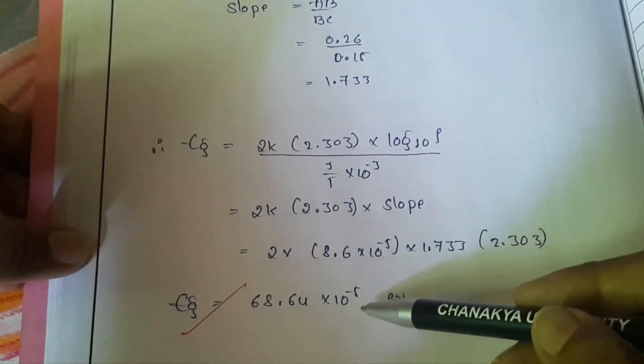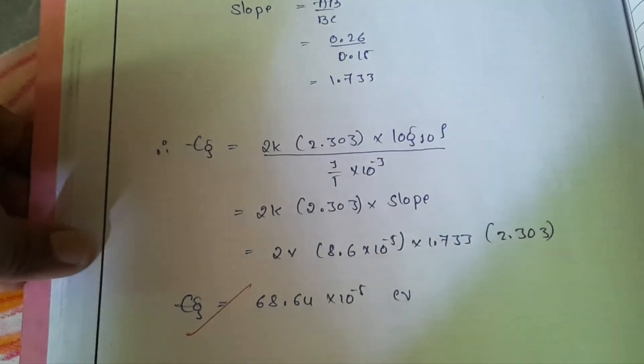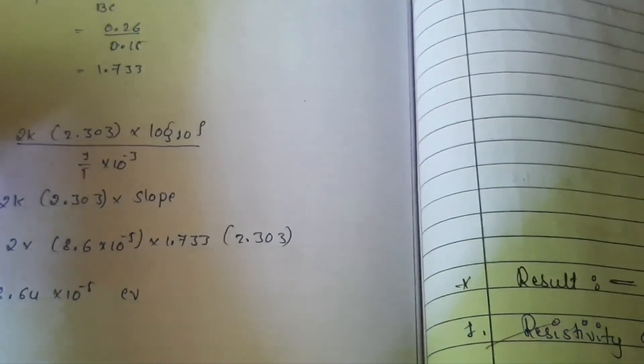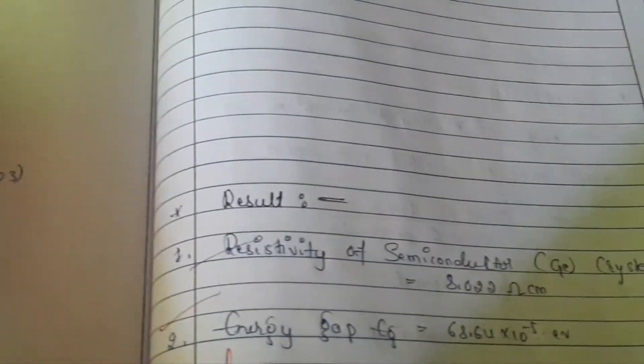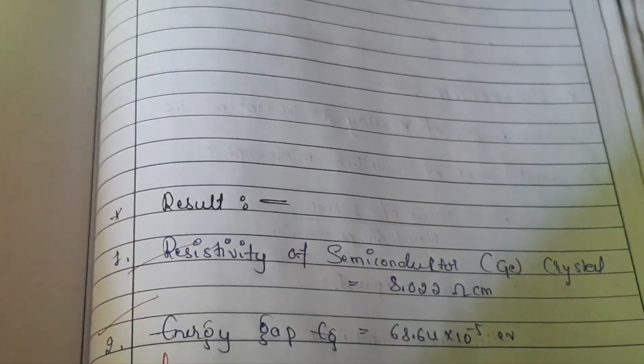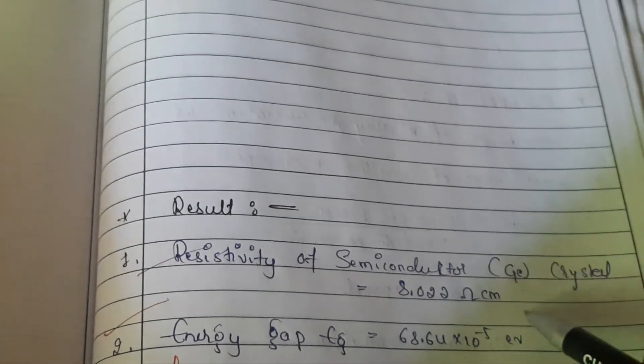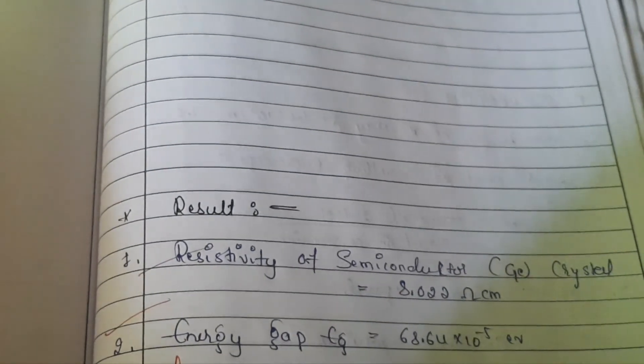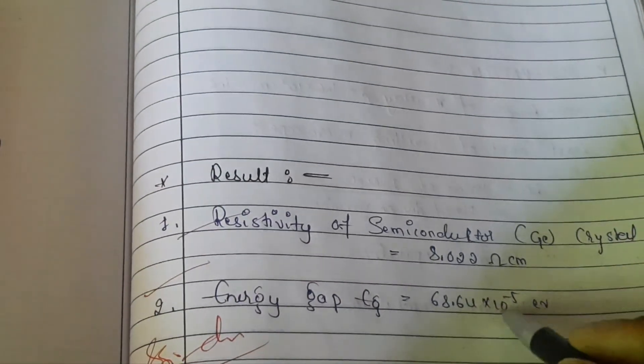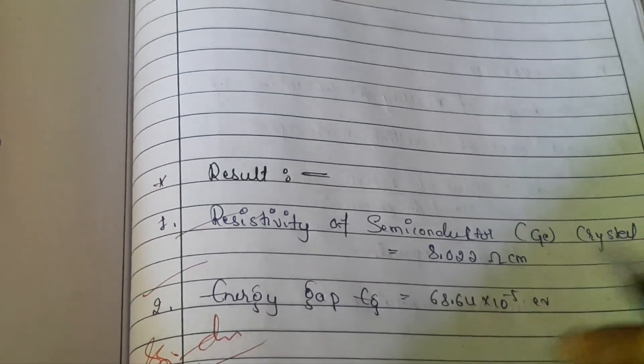That is 68.64 × 10⁻⁵ electron volt. You can write here the resistivity of the semiconductor for the germanium crystal, and the energy gap that we got we can write here.